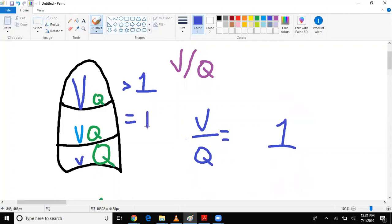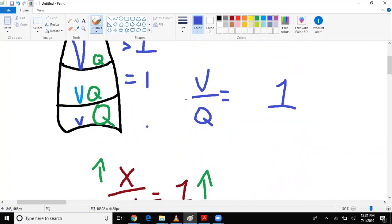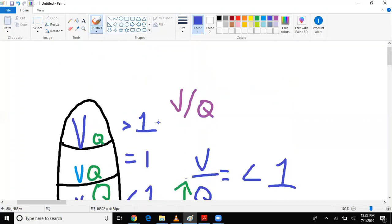And therefore, in the base, since we have significantly more Q than we do V, then what would the VQ be? At the base, it will be less than 1. You see that? And that's your VQ mismatch.